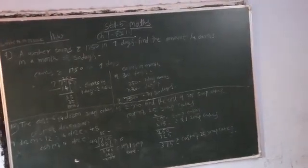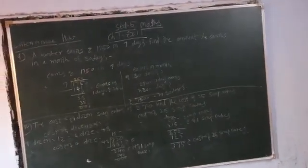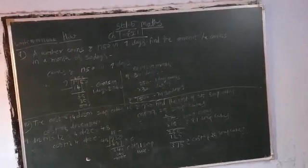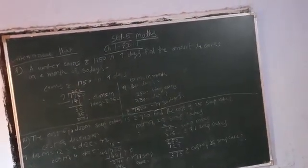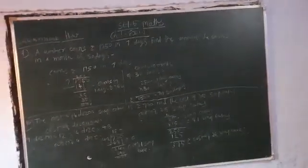So, 250 is the answer for one day. For 30 days, we have to multiply 250 by 30, which gives us 7,500 rupees.